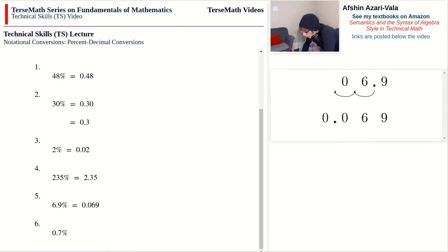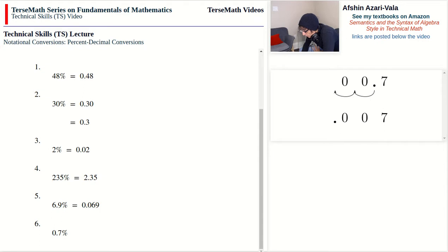Now we have 0.7%. We do the same — take the decimal point and move it back over two digits, adding a zero where necessary. We get 0.007. Adding the zero on the whole side gives a final answer of 0.007, or seven thousandths.